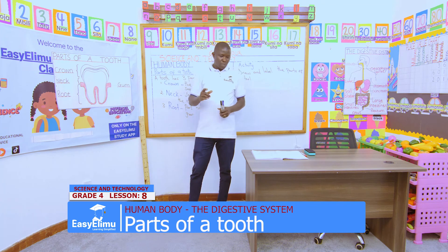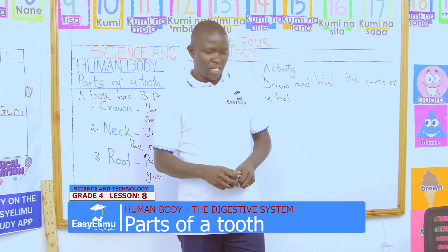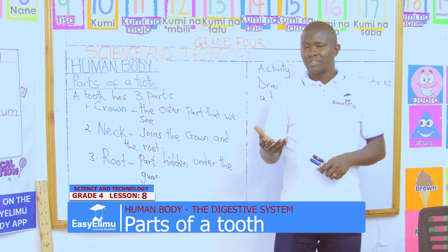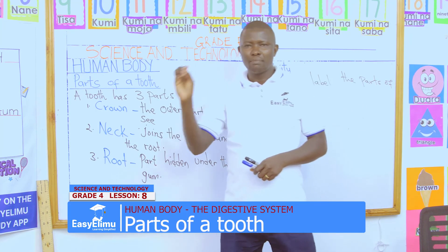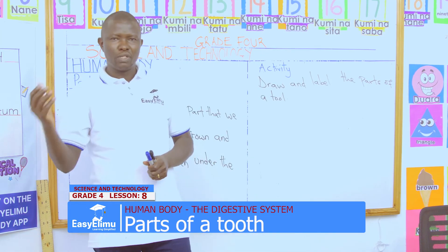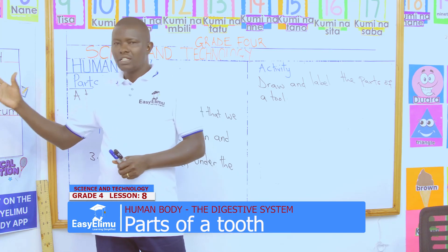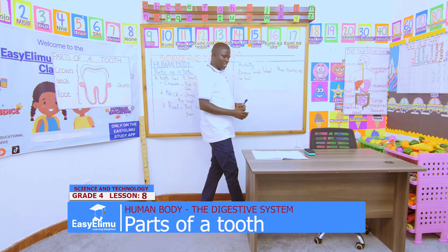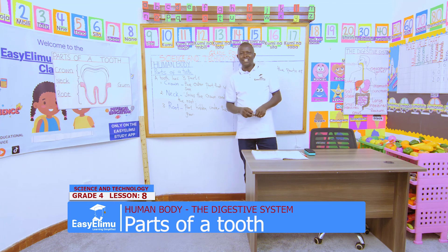Print those pictures showing the parts of the tooth and bring them so that we may attach them in our portfolio for future learning. Observe from the parent's laptop or gadget - it may be an iPad or a tablet. Print parts of a tooth and bring it so that we can attach it in our portfolio for future reference. That marks the end of our lesson for today - have a wonderful time.